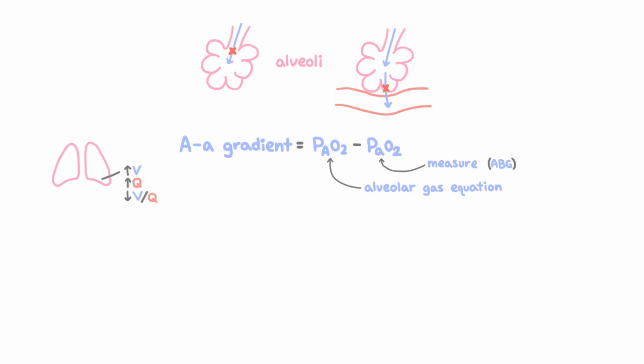And if you're confused about these concepts of shunt and VQ mismatch, we're going to talk a lot more about them soon. So the AA gradient is always over zero, and actually the normal AA gradient increases with age, and it can be approximated with this equation. So this tells you the normal AA gradient. And if the AA gradient is greater than this amount, then we say there's a problem.